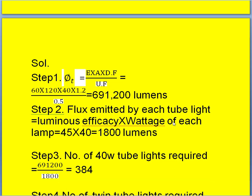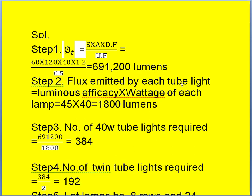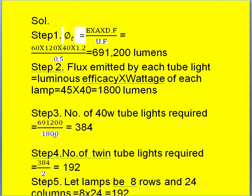Now calculate the flux emitted by each tube light, which equals luminous efficacy into wattage of each lamp. Luminous efficiency is 45 lumens per watt and wattage is 40 watts, so multiplying both gives 1800 lumens. To supply the total flux, the number of 40-watt tube lights required is total flux divided by 1800 lumens per lamp. We get 384 lamps required.